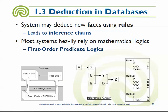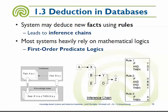Looking at this figure, we see a set of facts in the database — for example, 'A is X.' In the rules, if 'A is X' then 'B is Y,' we add a new fact to the database. This can trigger another rule, and another, creating what we call an inference chain — this triggers this, which triggers that, and eventually we get additional facts derived from the originals.